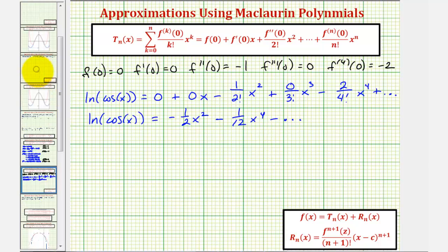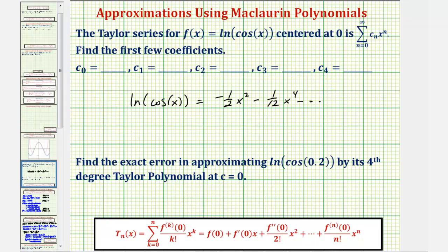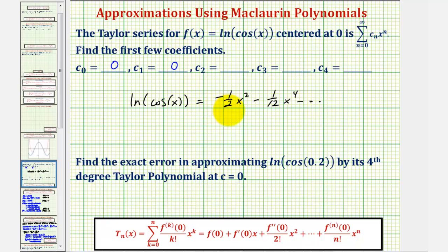Going back to the question, we find c sub zero through c sub four. c sub zero is zero since there is no constant term. c sub one is also zero because there is no linear term. c sub two is negative one-half. c sub three is zero since there is no degree three term. And c sub four is the coefficient of the degree four term, so c sub four is negative one-twelfth.